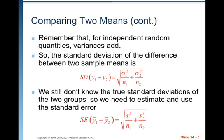Remember that for independent random quantities, variances add, not standard deviations. So the standard deviation of the difference between two sample means is the square root of the sum of the individual variances. We still don't know the true standard deviations of the two groups, so we need to estimate and use the standard error — the square root of the sum of the variances based on standard error.